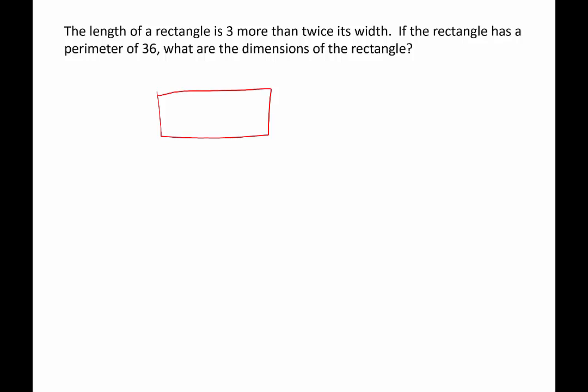And then it refers to the length of the rectangle, the width of the rectangle, and the perimeter of the rectangle. So we're going to use L for length and W for width.